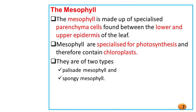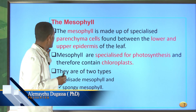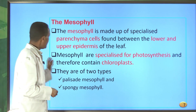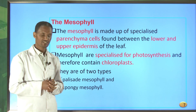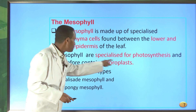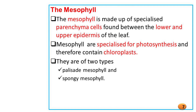One of the important parts of the leaf is the mesophyll, which is found in the internal structures of the leaf. The mesophyll is made up of specialized cells called parenchyma cells. These parenchyma cells are found between the lower and upper epidermis of the leaf. Mesophyll cells are specialized for photosynthesis, and therefore they contain a special organelle important for photosynthesis which we call chloroplasts.